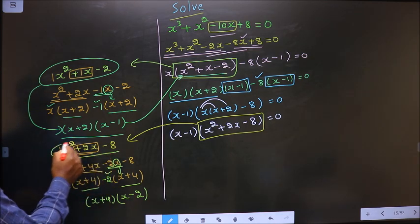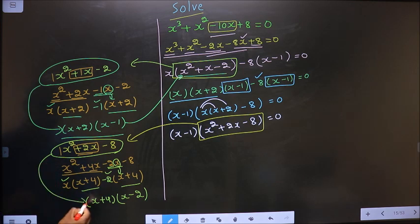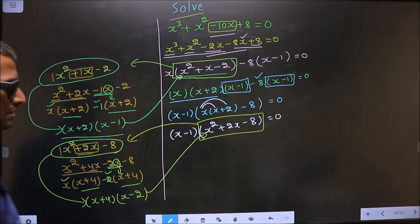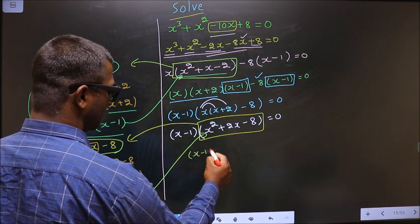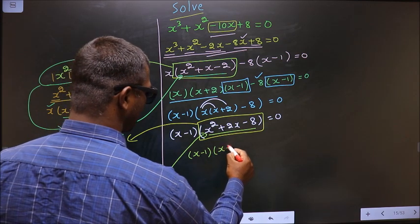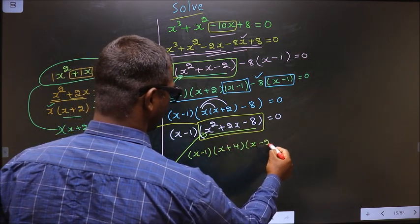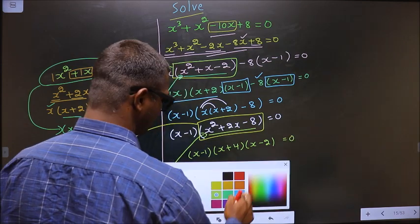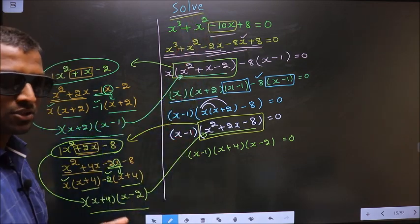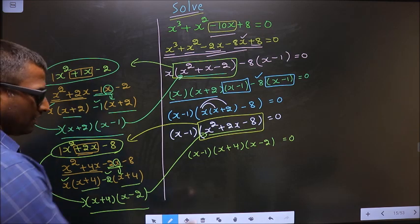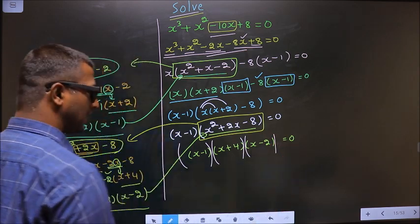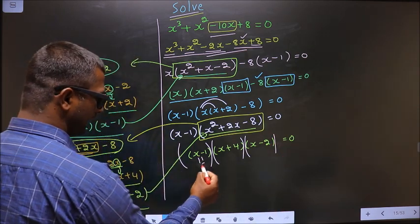Now in place of this quadratic I replace this over here. So this is x minus 1 — in place of this quadratic now you write x plus 4, x minus 2, equal to 0. Okay, now here they told us to solve, so we should find the values for x. We got product of brackets equal to 0, so to get the values for x you equate each to 0.